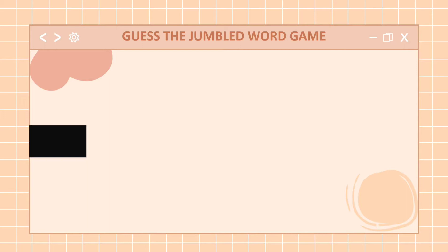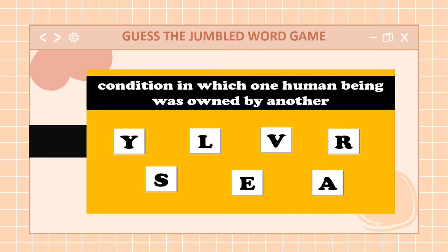The next word is a condition in which one human being was owned by another. Your 10 seconds starts now. Time is up. What's the word? Very good, class — the word is slavery.